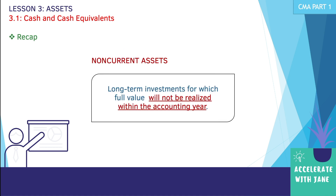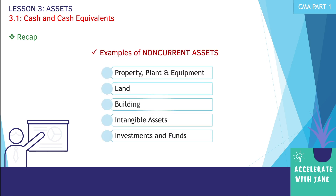In the succeeding sections I'll be covering each of those current assets. The second classification is non-current assets, defined as long-term investments for which full value will not be realized within the accounting year — meaning all assets expected to be realized beyond one year. Examples of non-current assets include property, plant and equipment, land, building, intangible assets, investments, and funds. I'll be discussing each of these in the succeeding lessons.